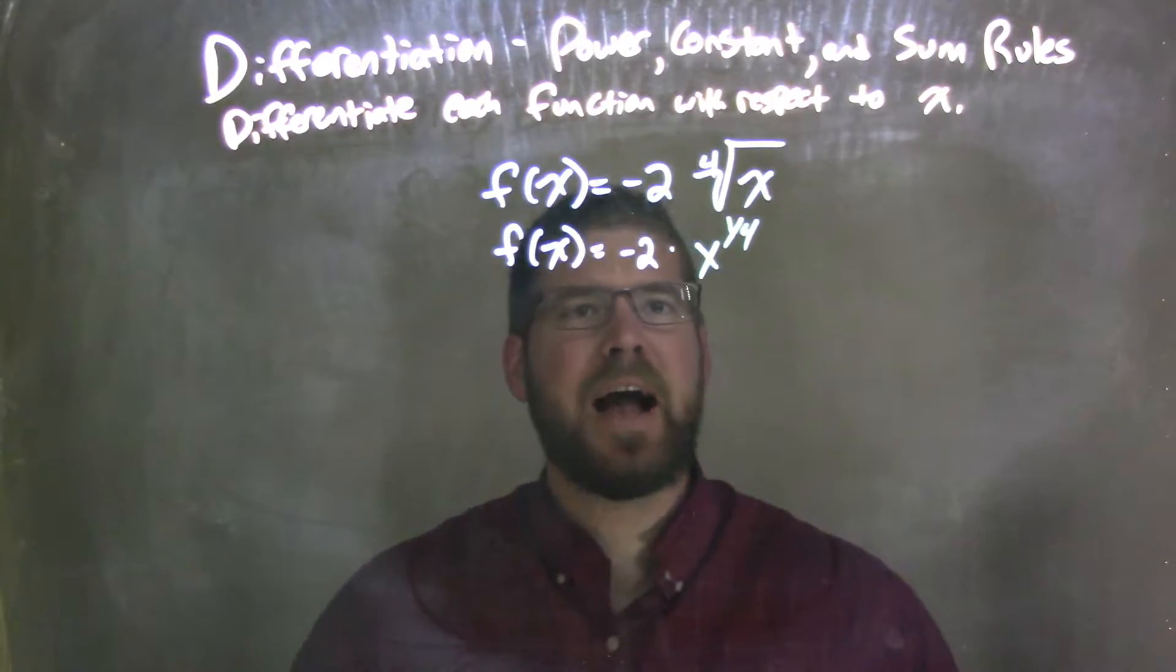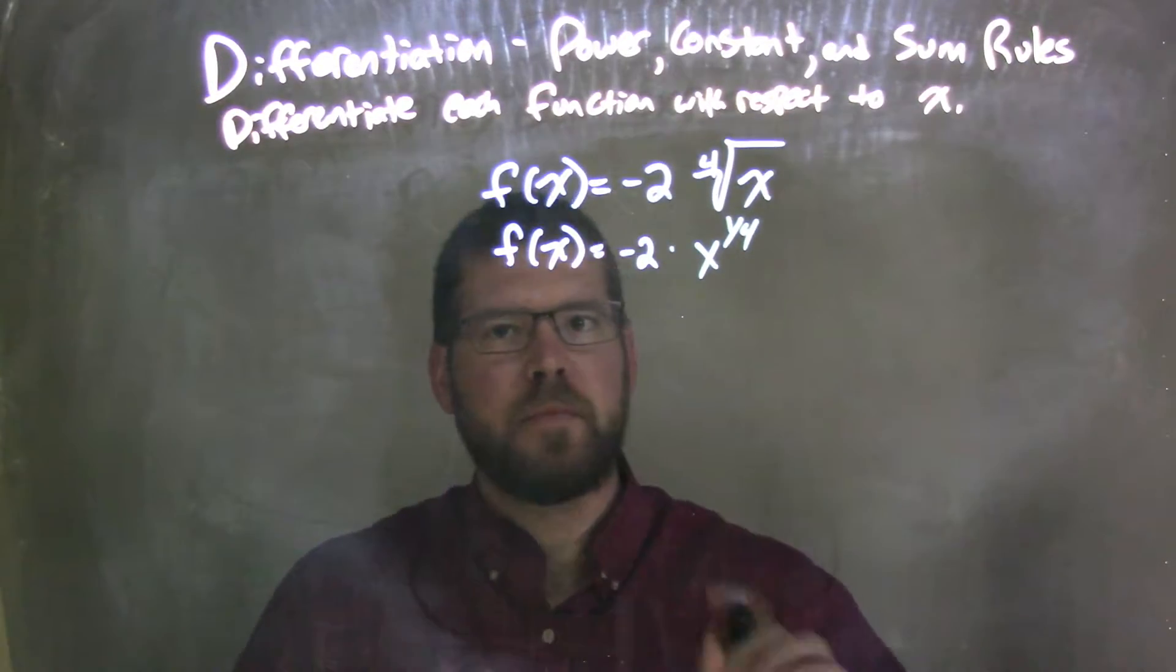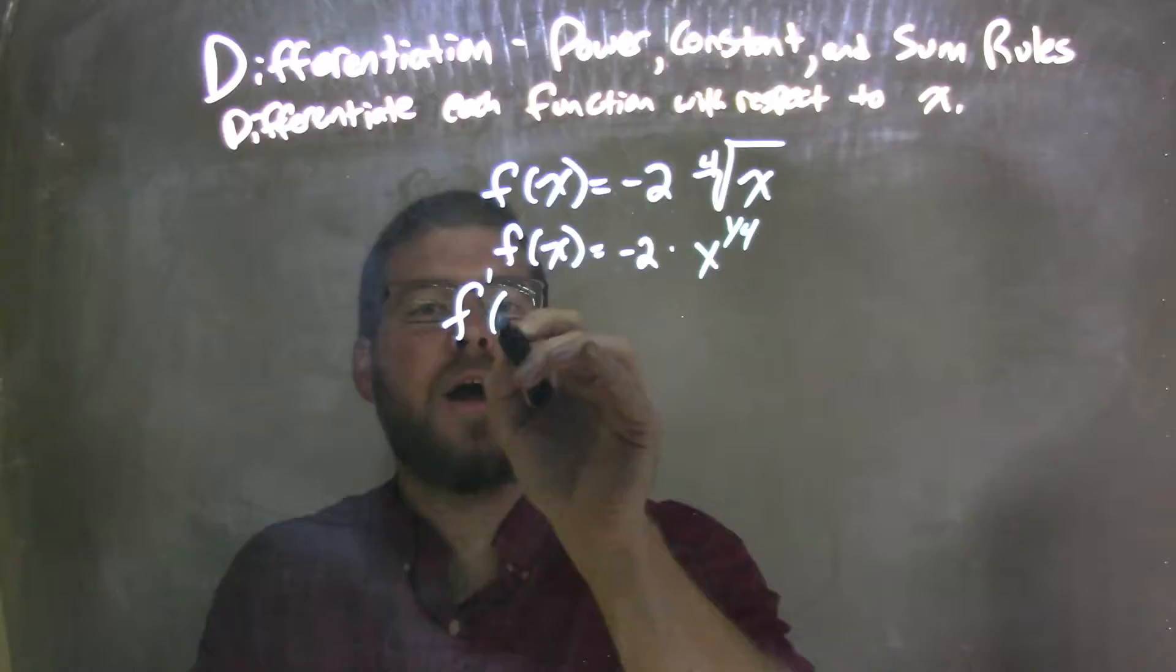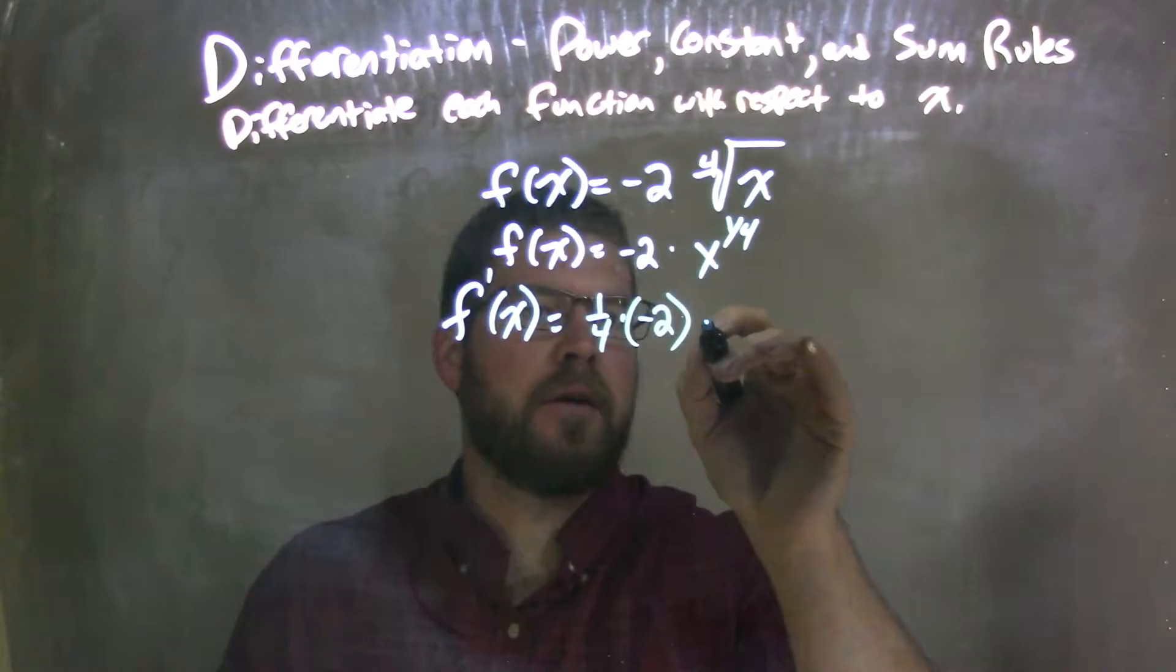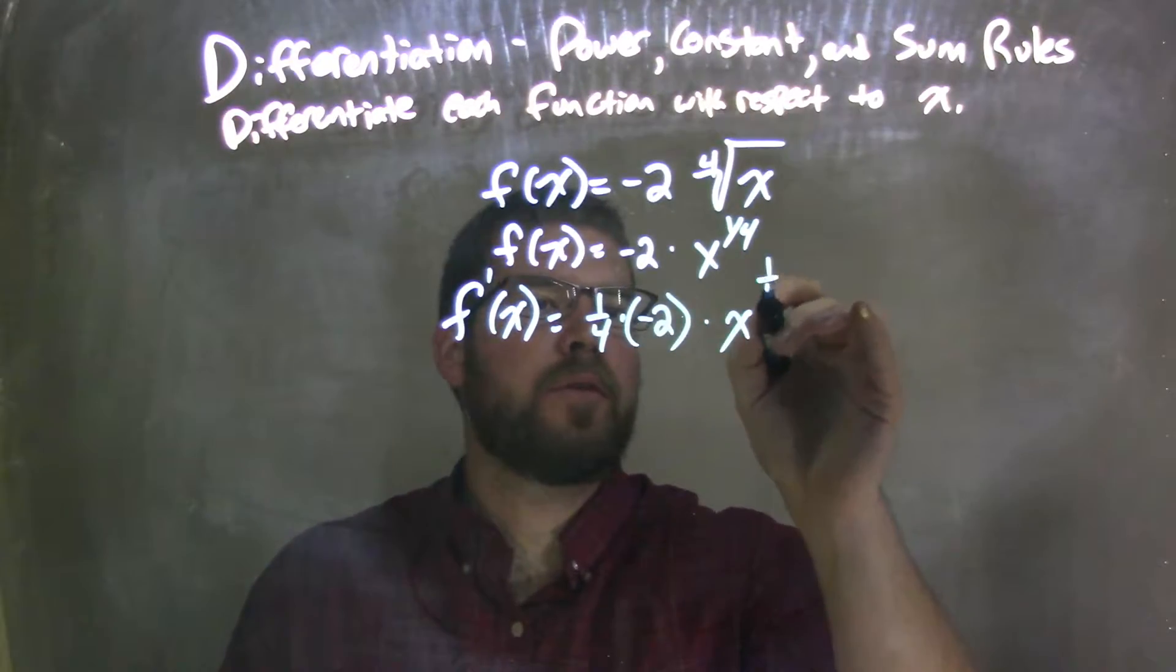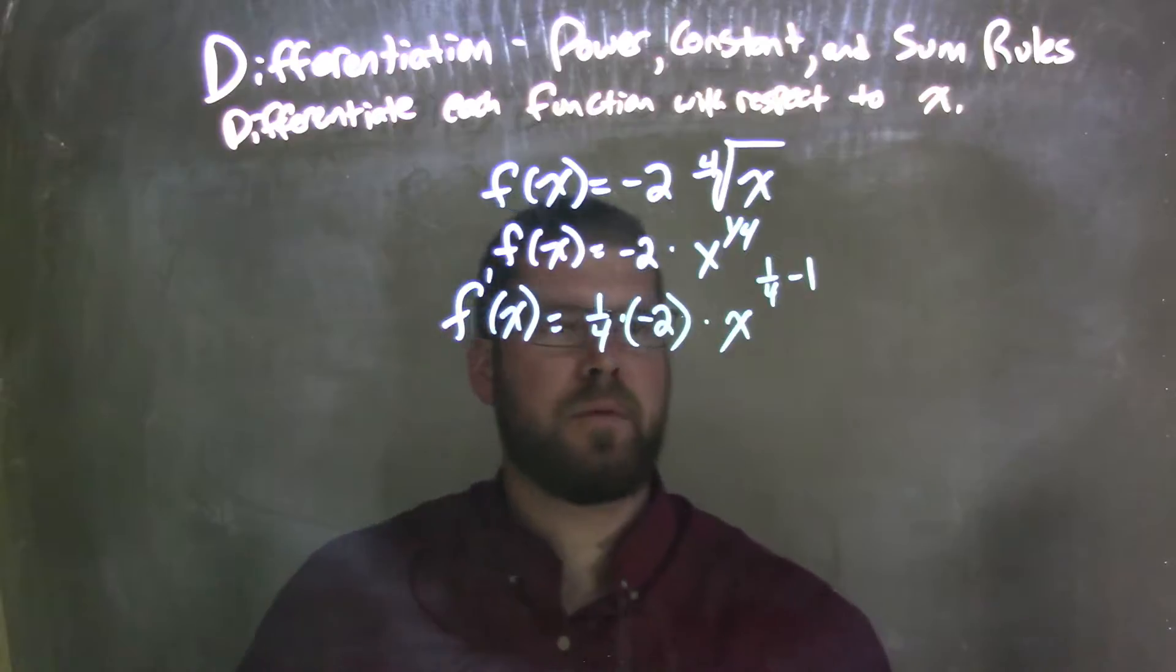So now from here, I can apply the power rule. Now I'm taking my derivative, f prime of x is equal to, well, the one-fourth comes out, one-fourth times negative 2, multiplication there, x to the one-fourth minus 1.